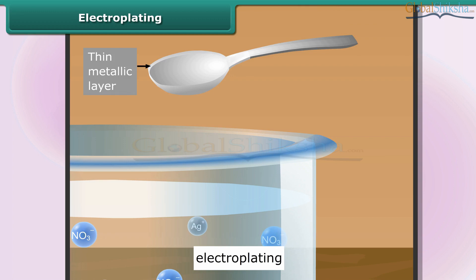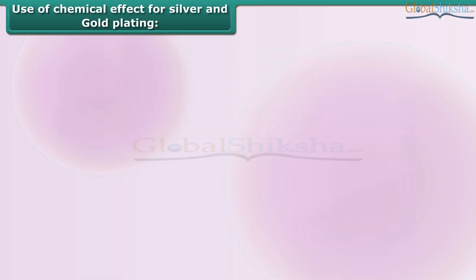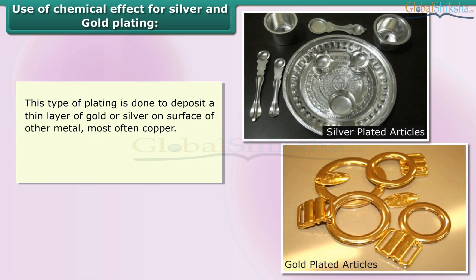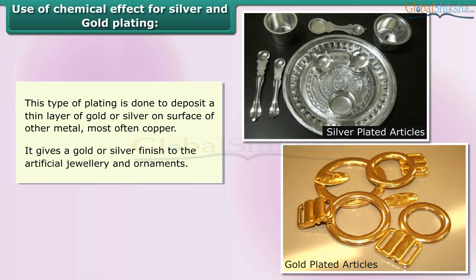The thickness of the layer depends on the conditions under which the electrolysis is conducted. This process is known as electroplating. This type of plating is done to deposit a thin layer of gold or silver on the surface of another metal, most often copper. It gives a gold or silver finish to artificial jewelry and ornaments.